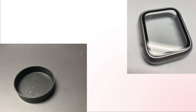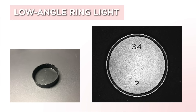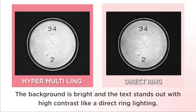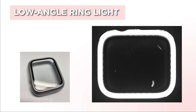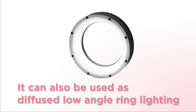Let's take an image of the previous objects using hyper multi-ring lighting. First, here is the engraving on the lens cap that was imaged using direct ring illumination earlier — the background is bright and the text stands out with high contrast. Next is the scratch on the transparent smart watch cover: you can make scratches more visible by eliminating glare from lighting. In addition to these functions, it also functions as a diffuse low angle ring lighting.